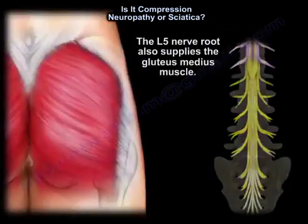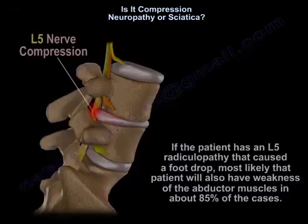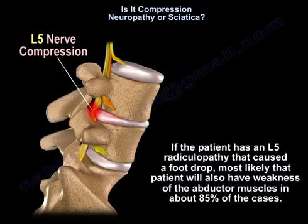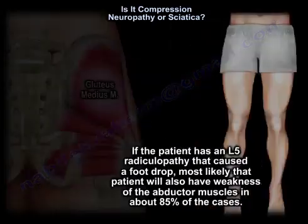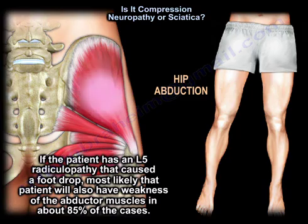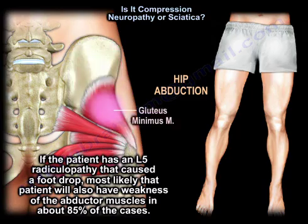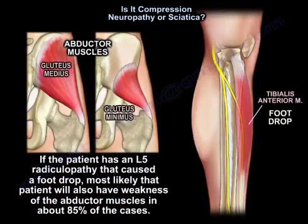Also, the L5 nerve root supplies the gluteus medius. So if the patient has an L5 radiculopathy causing a foot drop, most likely that patient will also have weakness of the abductor muscles in about 85% of cases.